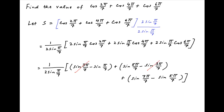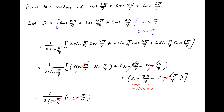Inside the brackets, sin(3π/7) cancels, sin(5π/7) cancels, and sin(7π/7) equals sin(π) which is 0. We are left with only minus sin(π/7) inside the brackets. Therefore, S equals 1/(2·sin(π/7)) multiplied by minus sin(π/7). The sin(π/7) terms cancel, giving S = −1/2, which is the required answer.